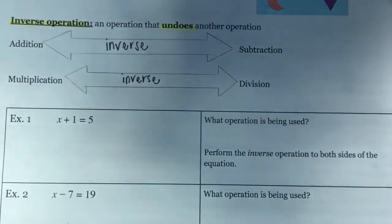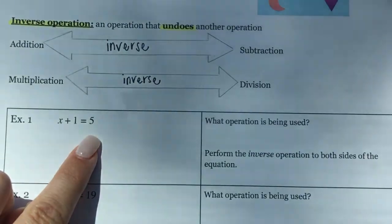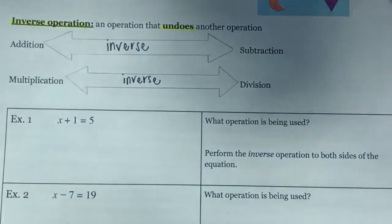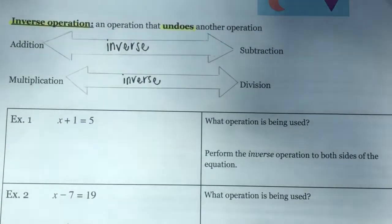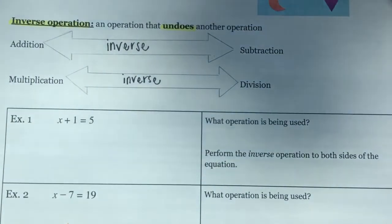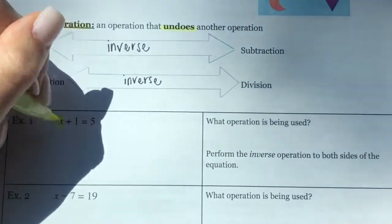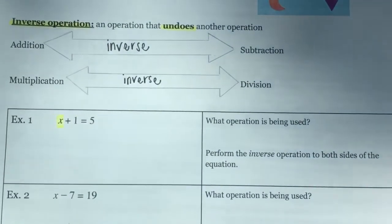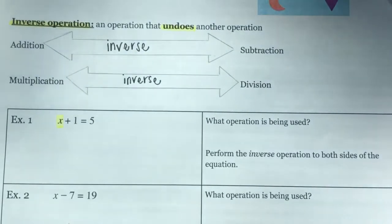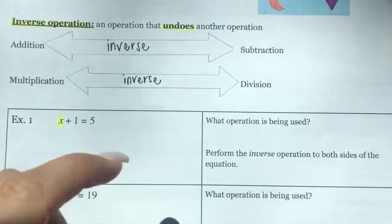For Example 1, I have X + 1 = 5. The unknown variable I'm solving for is X. A number is being added to X, so the operation being used here is addition.